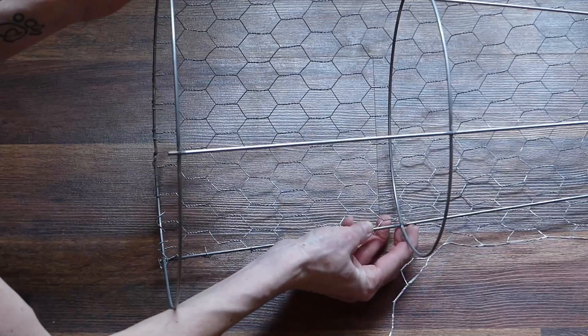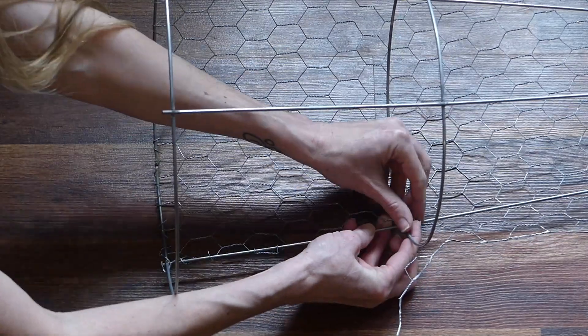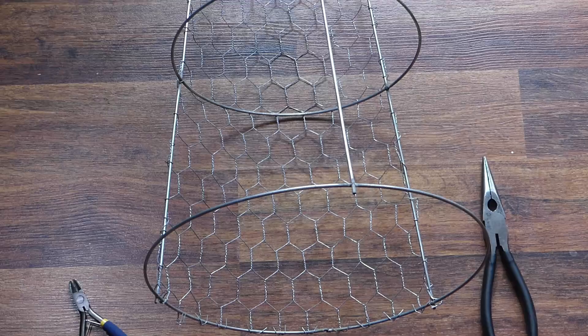Once you have one section completed, move to the next section until the entire tomato cage is covered.